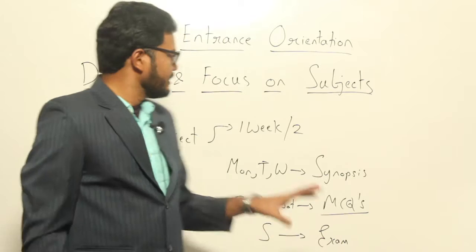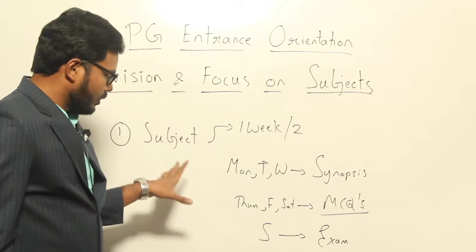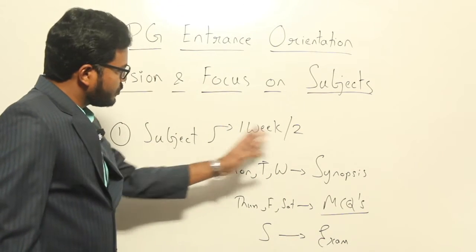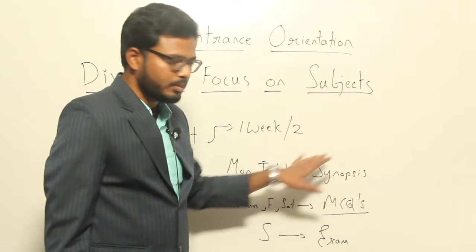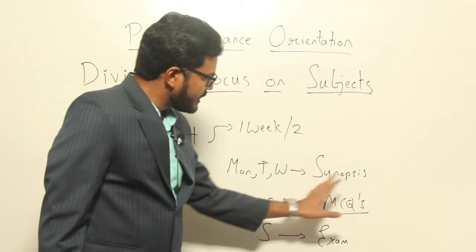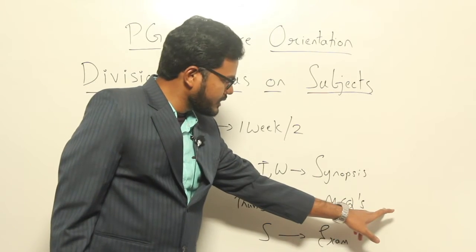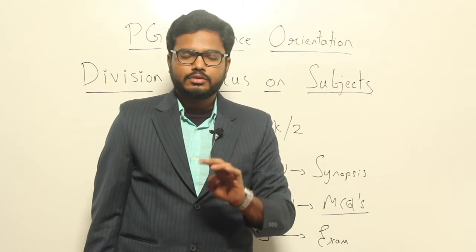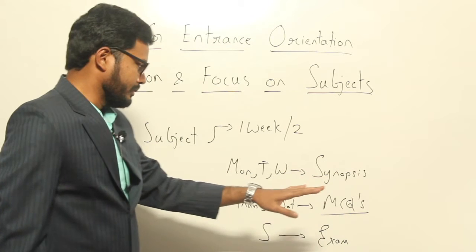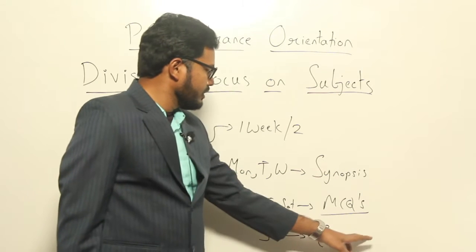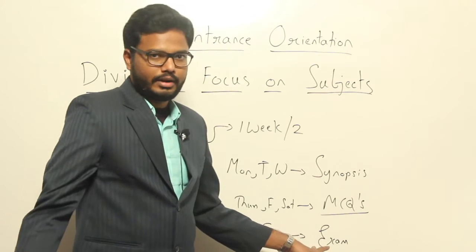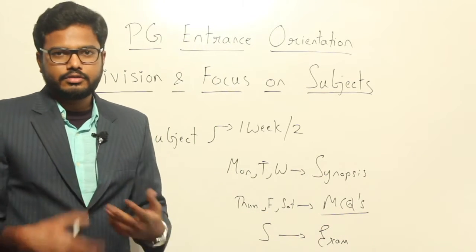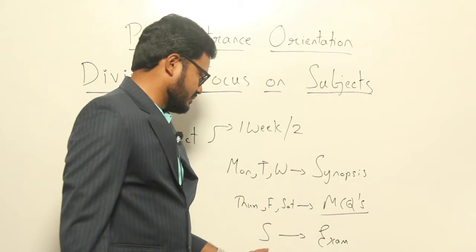By following this specific pattern, we can cover 70 to 80 percent of the syllabus in that particular subject, but not the entire hundred percent. So initially, start with a weekly or bi-weekly plan — spend the first two to three days completing the synopsis, the next three days concentrating on multiple choice questions, cross-checking answers, and referring to standard textbooks, adding stick-on notes if necessary. On Sunday, test yourself through an online or offline exam conducted by an academy or through practice papers.